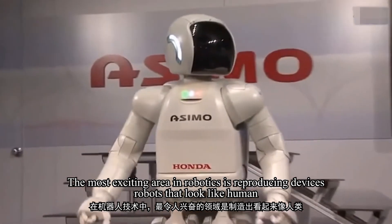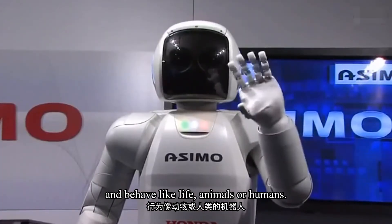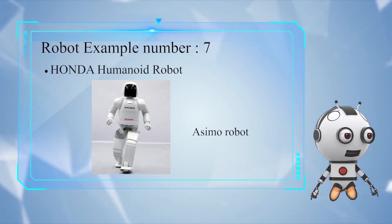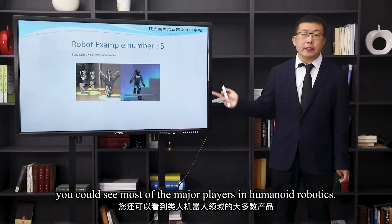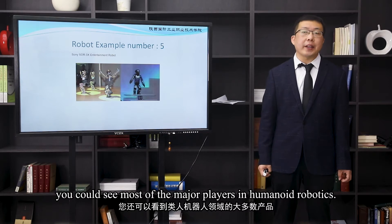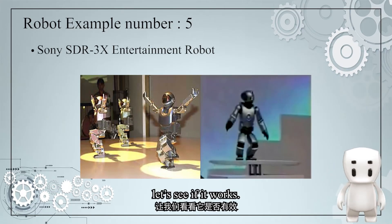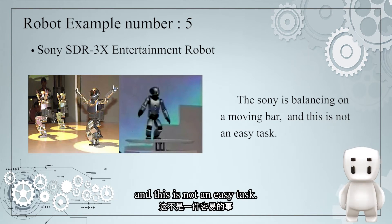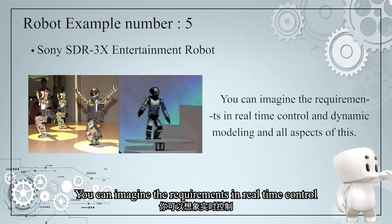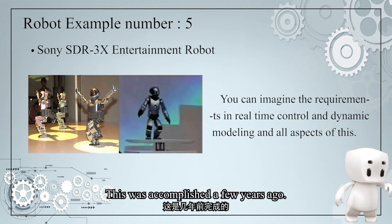The most exciting area in robotics is the reproduction of robots that look like a human and behave like live animals or humans. You can see here the latest in a series of developments. One of the major players in humanoid robotics is Sony — this robot is balancing on a moving bar, which is not an easy task. You can imagine the requirements in real-time control and dynamic modeling.